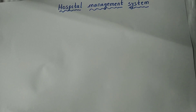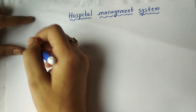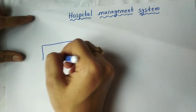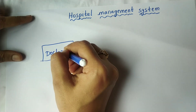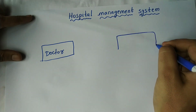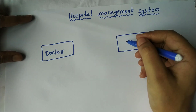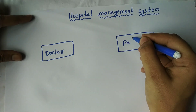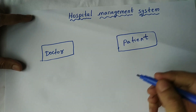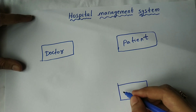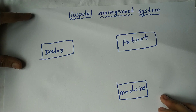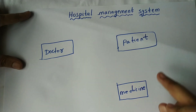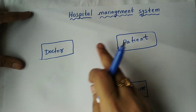An entity must be written inside a rectangular box, so we need to draw three rectangular boxes. I am going to draw the first rectangular box and write Doctor inside it, the second rectangular box with Patient, and the third rectangular box with Medicine. So the three entities are Doctor, Patient, and Medicine.